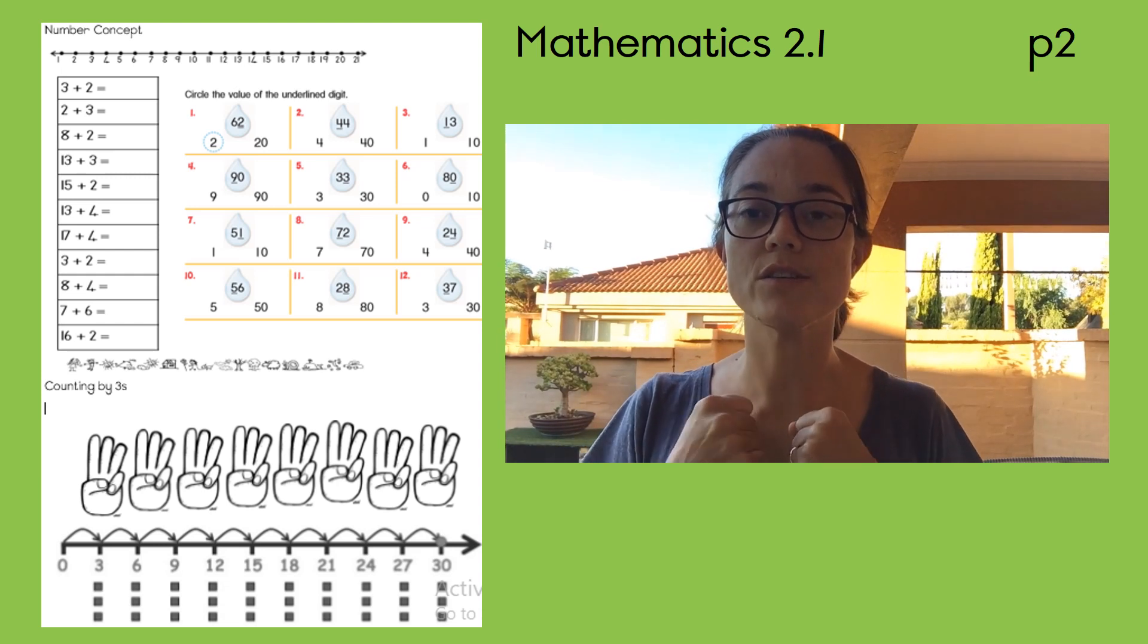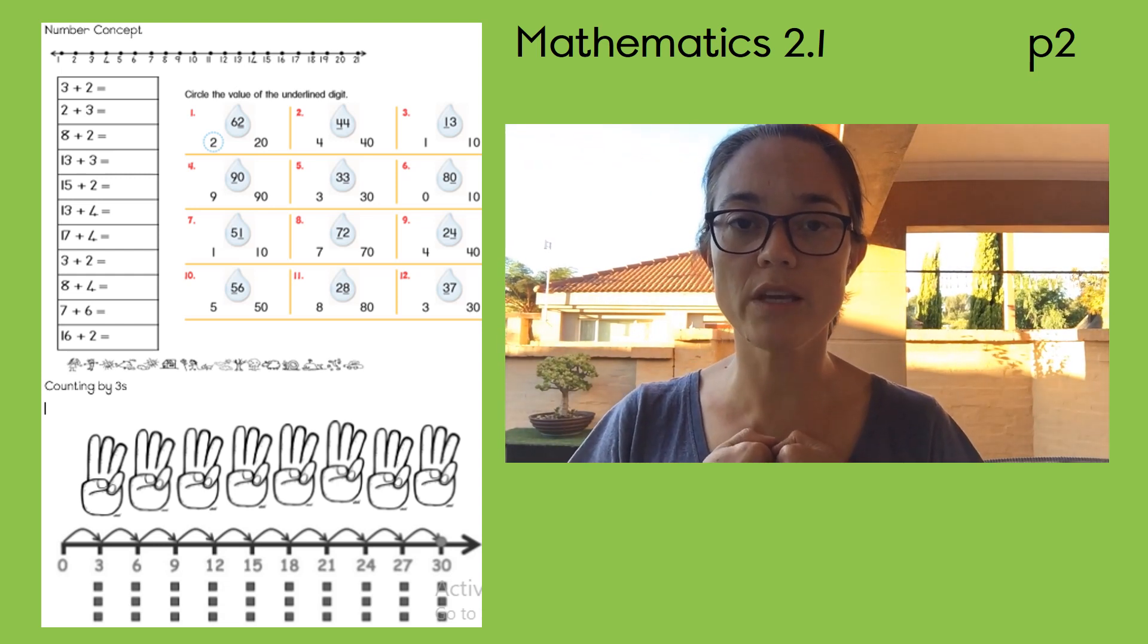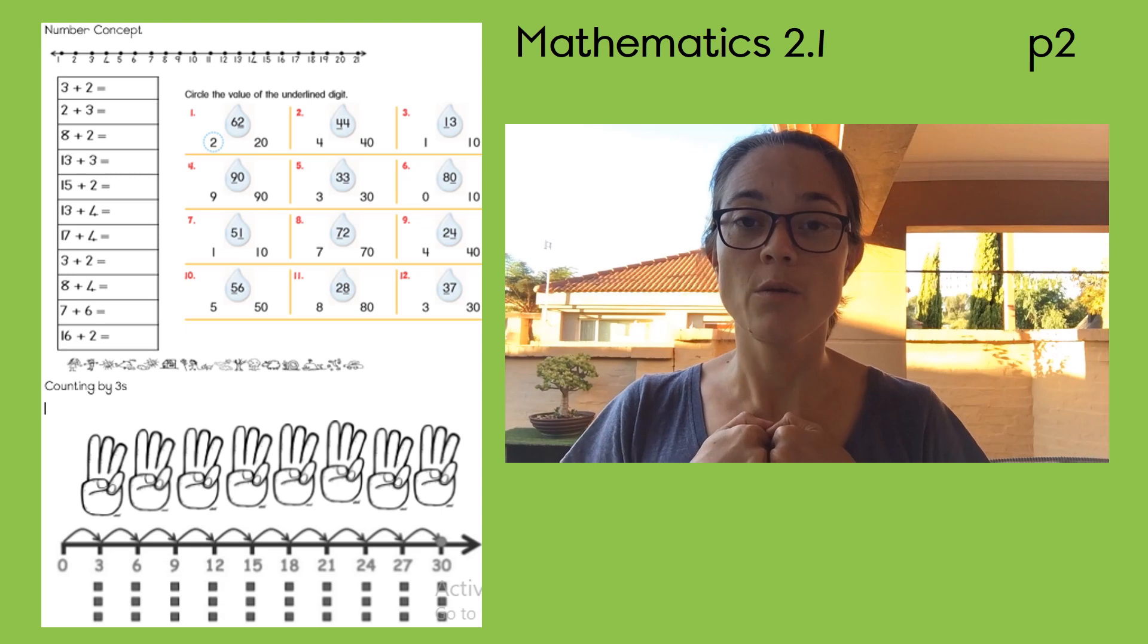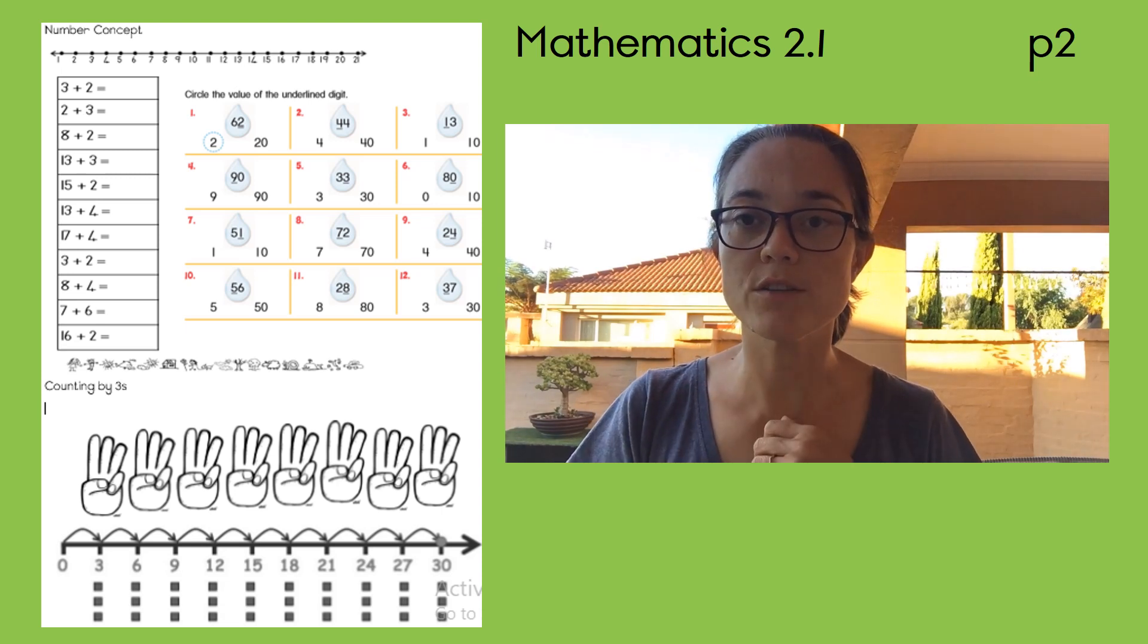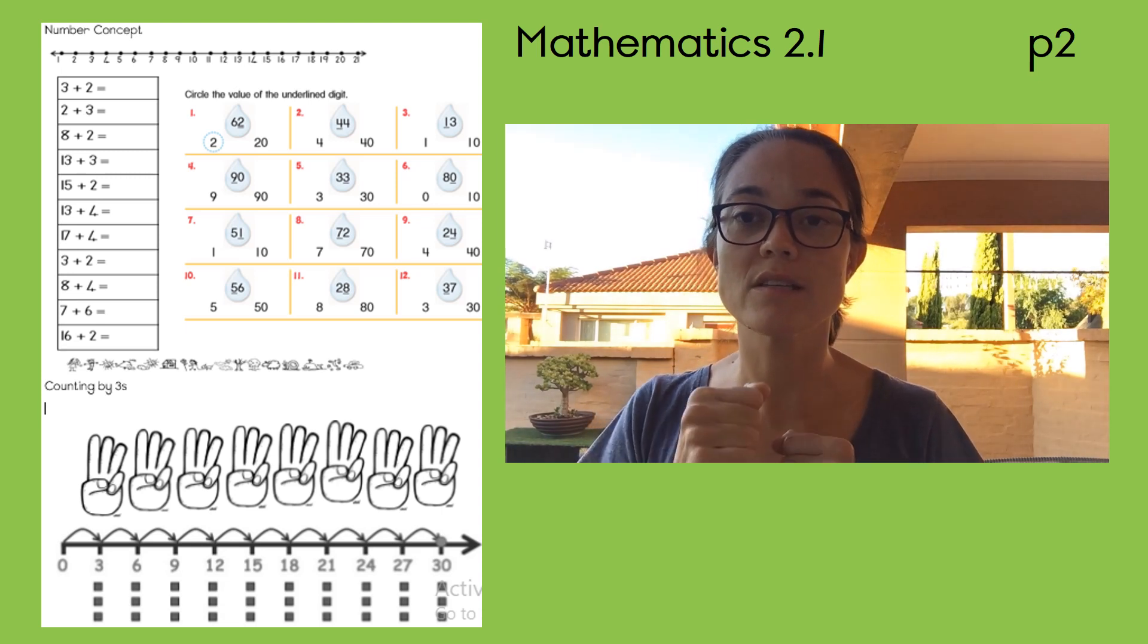Okay guys, so today we're going to skip counting threes. When we count in threes, we always start at 0. We skip number 1 and 2 and we land on 3. Skip 4 and 5 and we land on 6. So we're going to do it like this.